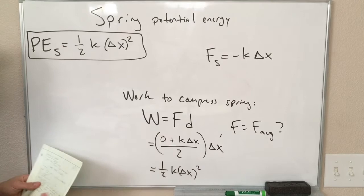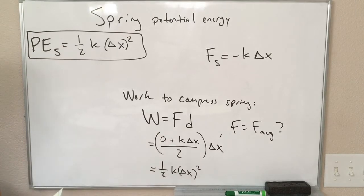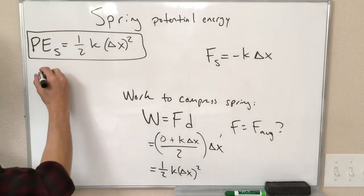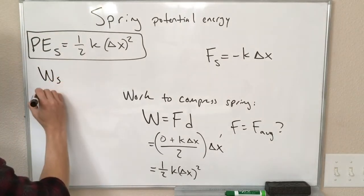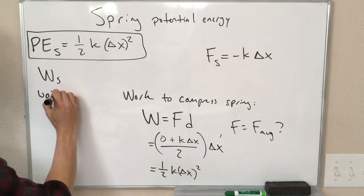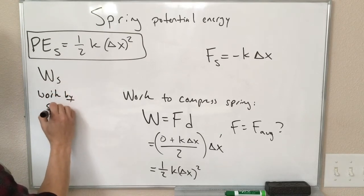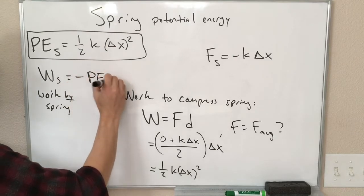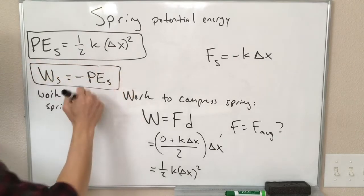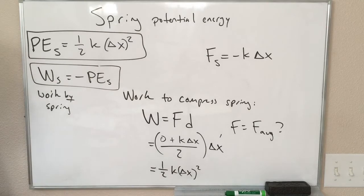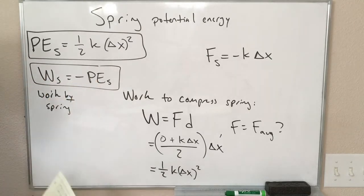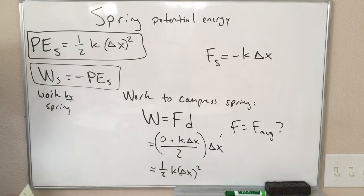Now this is the work that we did on the spring. The work done by the spring is the opposite of this. So W_s, this is the work by the spring, not the work by me but the work by the spring, is equal to minus PE of the spring. And this is for the same reason that we saw that the work done by gravity was equal to minus the potential energy of gravity.